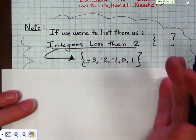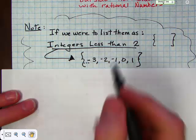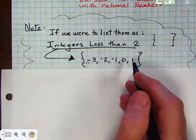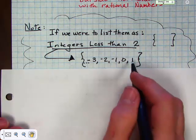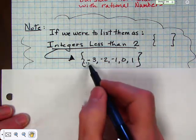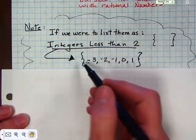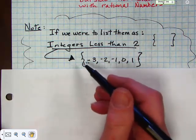You can't list 2 because it has to be integers less than 2, and there's no integer between 1 and 2 — the next integer is 1. These integers would go on forever and ever negatively.